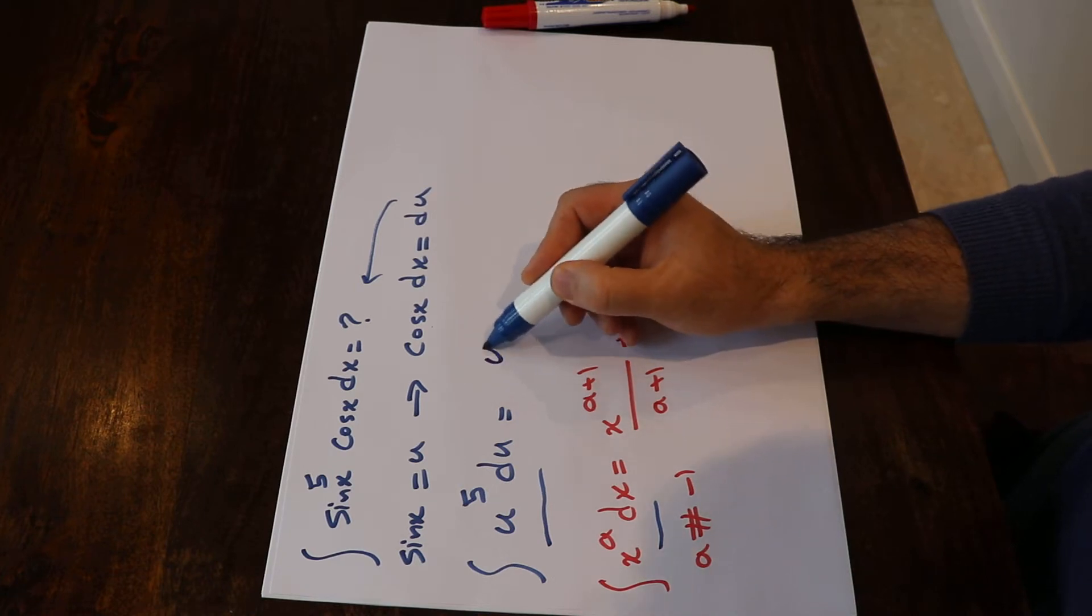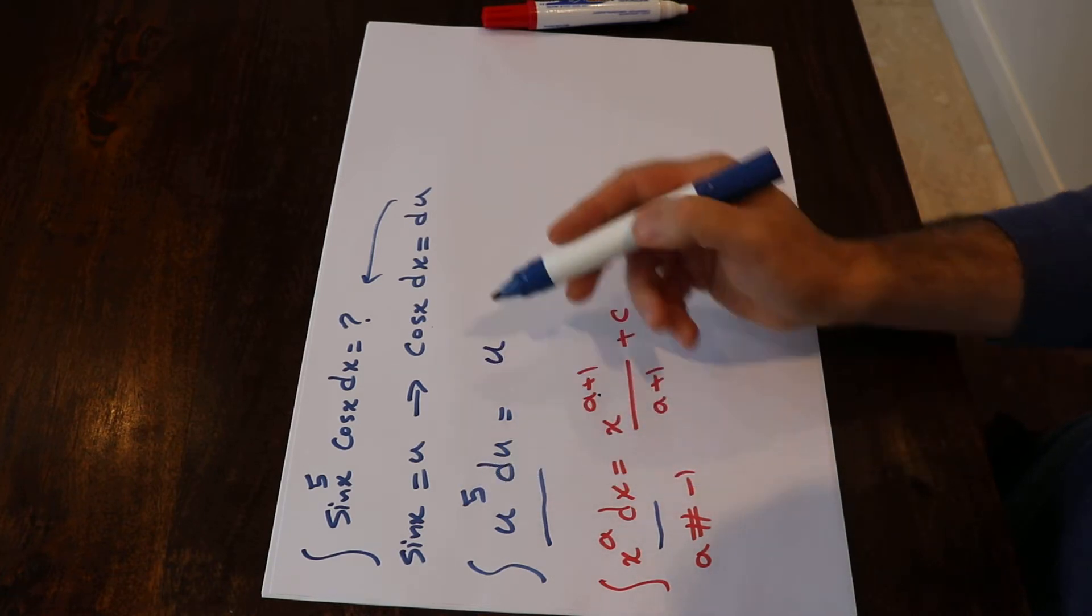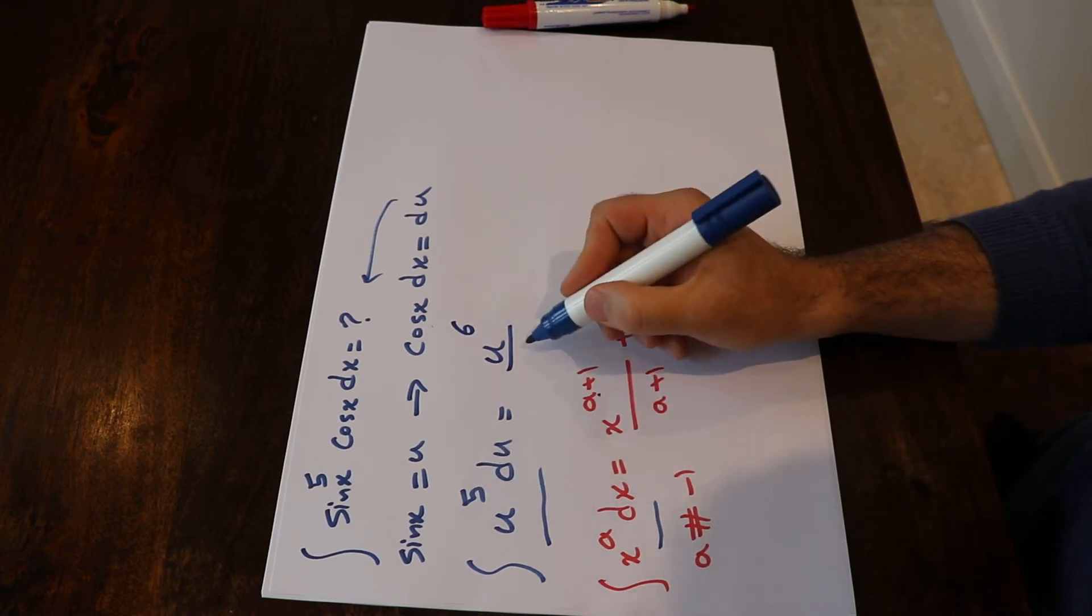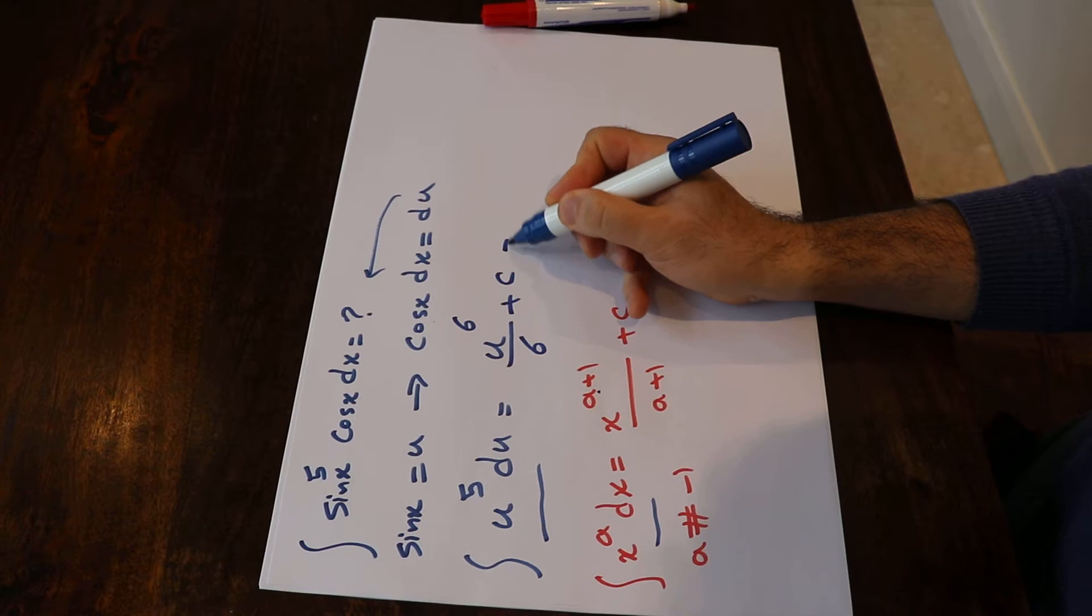So this will be equal to u to the power of a plus 1, that is 5 plus 1 which is 6, divided by again a plus 1, that is 5 plus 1, which is 6, plus c.